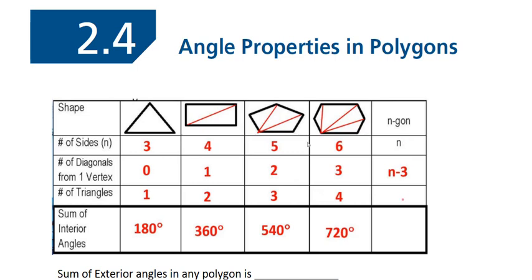How many triangles would there be in an n-gon? What is the relationship here between these numbers? Any observation there? N minus 2.